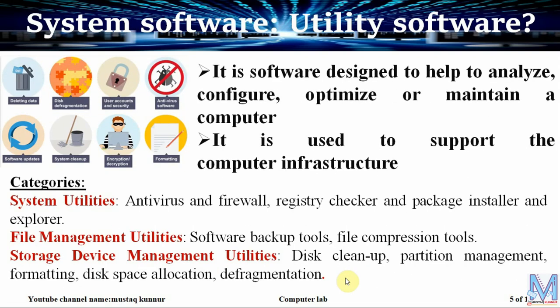Utility software is used to maintain the good health of a computer. It is also used to analyze, configure, optimize, or maintain a computer, and it supports the computer infrastructure. Utility software is further categorized into three types: system utilities, file management utilities, and storage device management utilities.